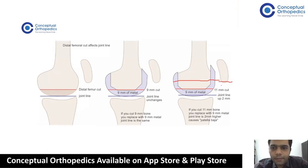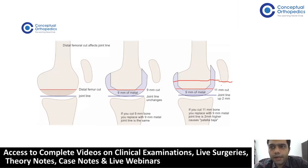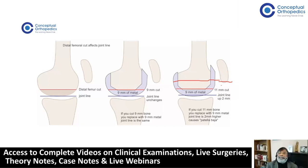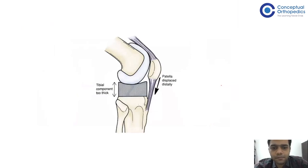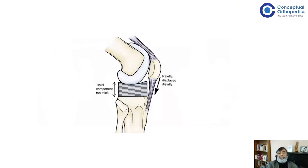As Norfolk rightly said, if you cut too much tibia, you can build up with the tibial insert, so that joint line stays where it is. Whereas if you cut too much femur, you can't build it up, and the joint line will keep going higher, making the patella correspondingly baja. There are certain bony landmarks and soft tissue landmarks to know for assessing joint line.